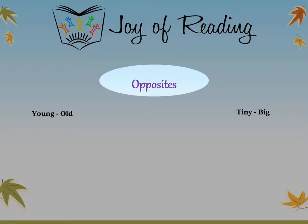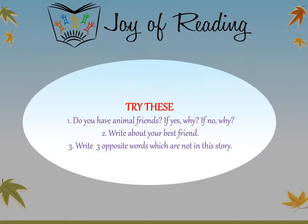Opposites: Young — Old. Tiny — Big. Try this: Do you have animal friends? If yes, why? If no, why? Next one: Write about your best friend. Next one: Write three opposite words which are not in this story.